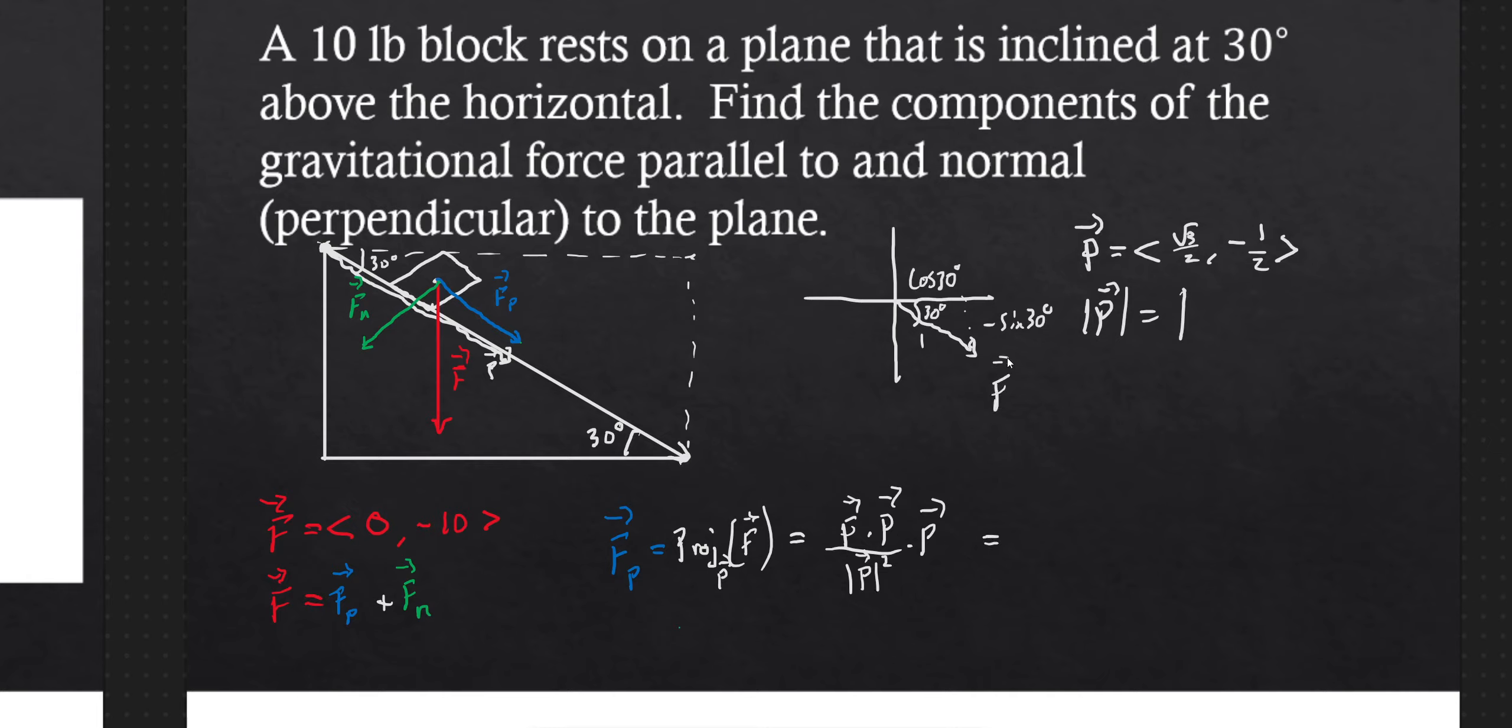How about I do that up here? F dot P here. F is this one. So 0 times square root of 3 over 2, that's 0. And then negative 10 times negative 1 half, that is 5. So F dot P is 5.